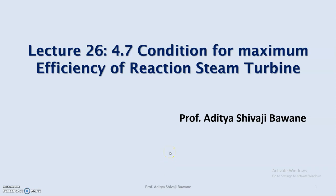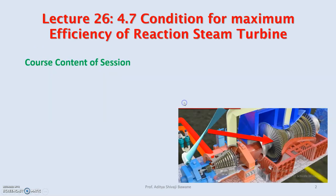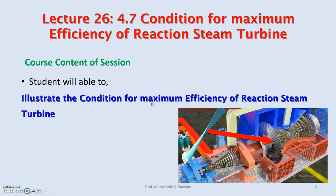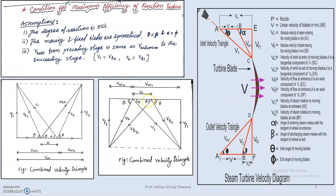Hello friends, today we are going to learn the condition for maximum efficiency in the case of a reaction steam turbine. During this session we will understand the velocity triangles at inlet and outlet for a reaction turbine, their similarities, how to draw the triangles in different cases, and the condition for maximum efficiency.